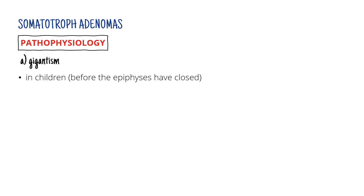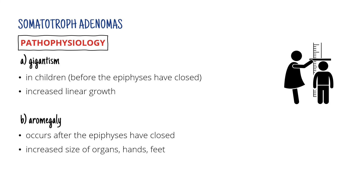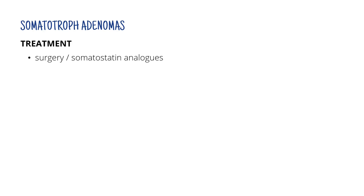Moving on to pathophysiology: if we have high levels of somatotropin in children — before the epiphyses have closed — then we talk about gigantism. The child is going to get taller and taller. If it happens after the epiphyses have closed, there's not much possibility of the patient getting taller, but their organs can get bigger, and so can their hands and feet. Due to the diabetogenic effect, the patient can also suffer from actual diabetes. The treatment options are similar to prolactinomas: either surgery, or you can give the patient somatostatin analogues, which inhibit growth hormone production — exactly what we want.